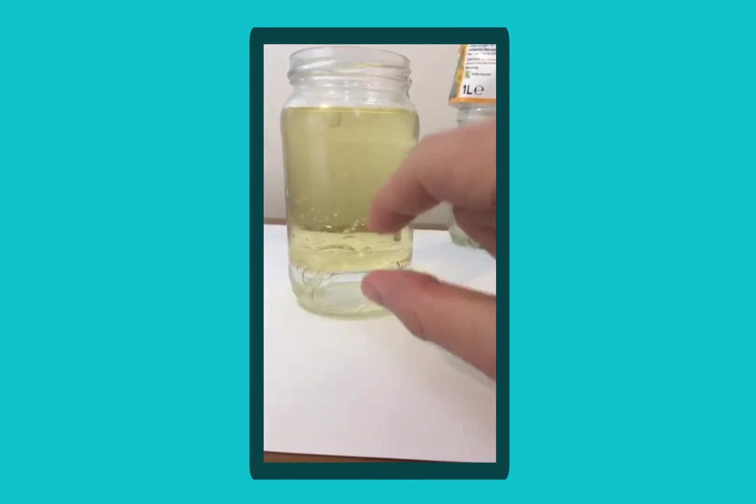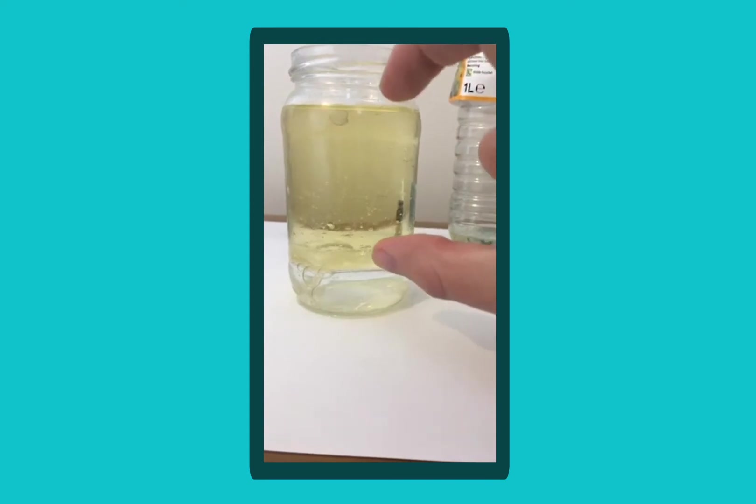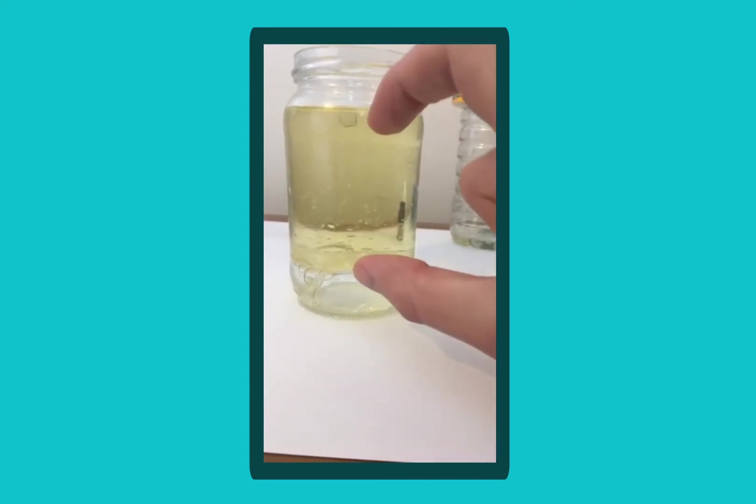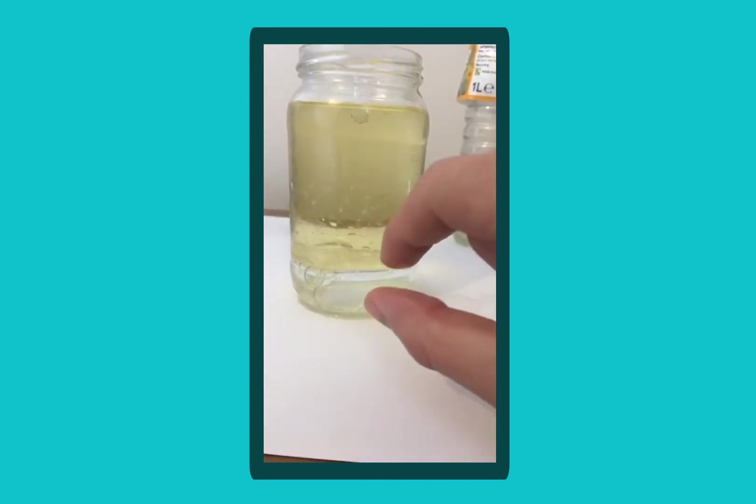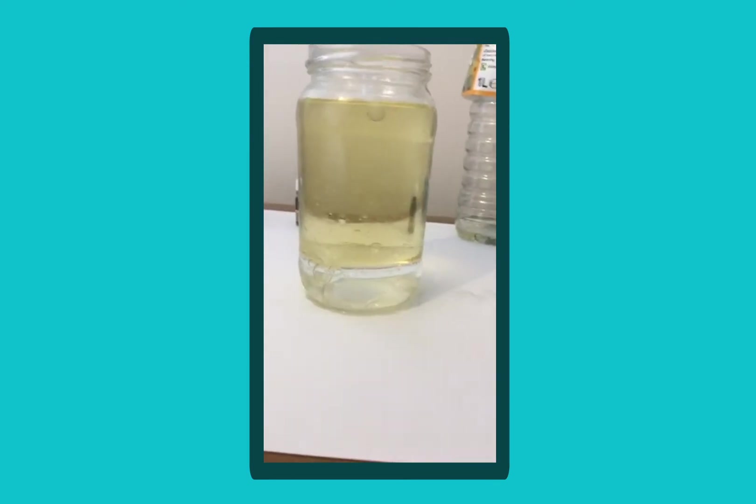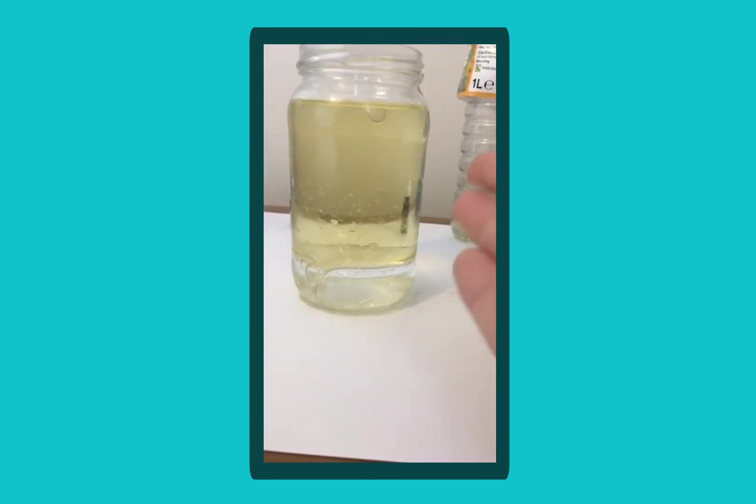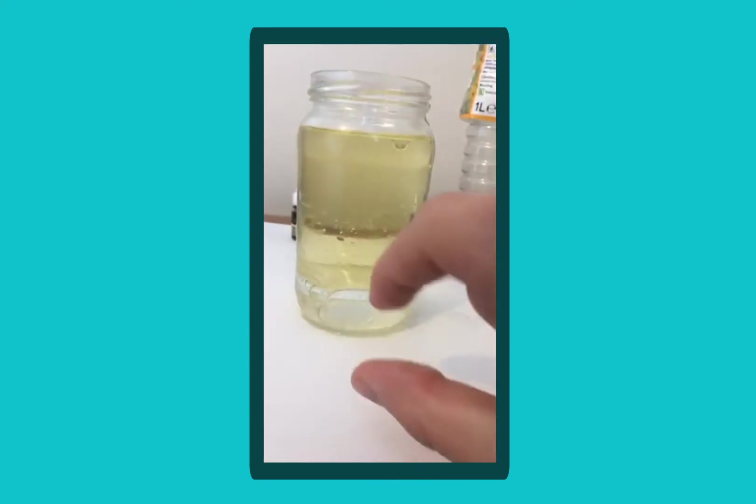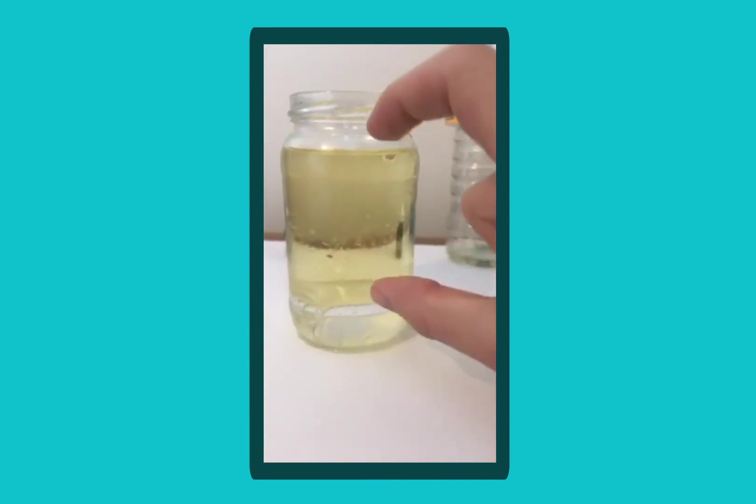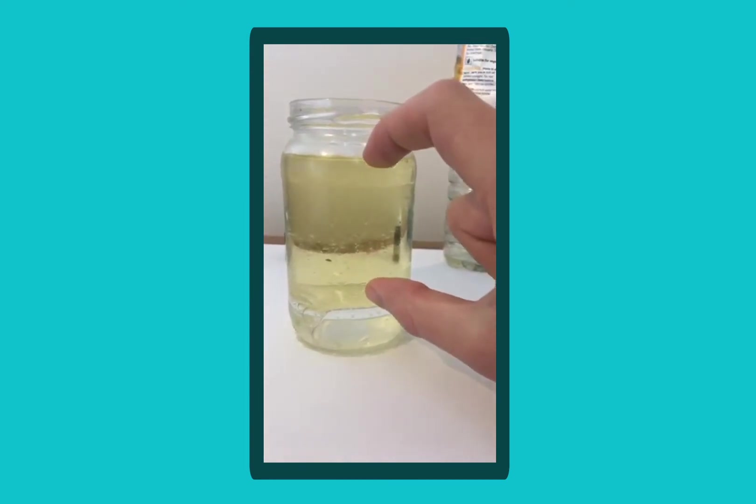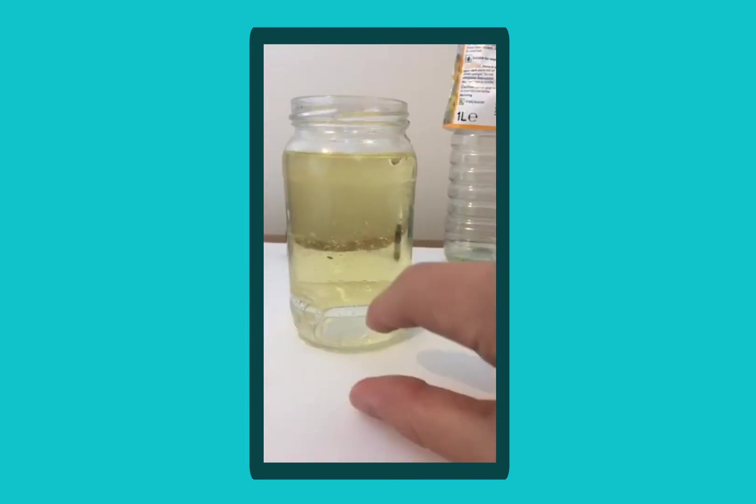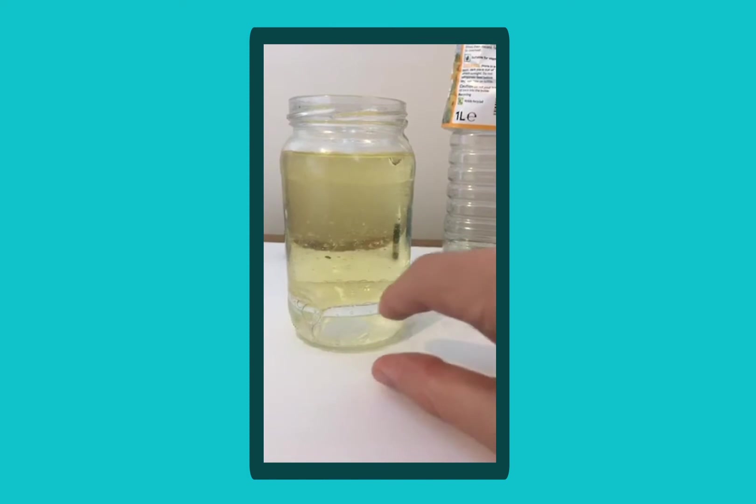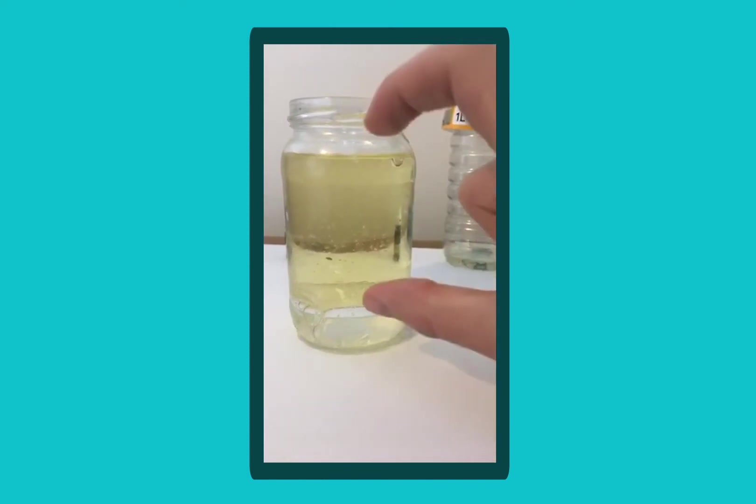And that's to do with the density of the liquids being used and that's something that you could ask your child to research. What is density? Go find it in a dictionary. What does it mean and how does it apply here? So why has the oil, vegetable or sunflower, floated on top of the water? And that's because the water has a higher density than the oil.